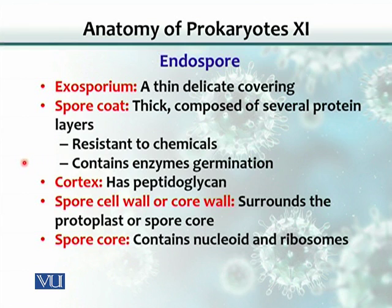The spore coat also contains enzymes for germination. The spore, under good conditions — conditions that are favorable for the bacterium — has to germinate and adapt to the environment for growth, which we call germination. So these enzymes are contained in the spore coat.